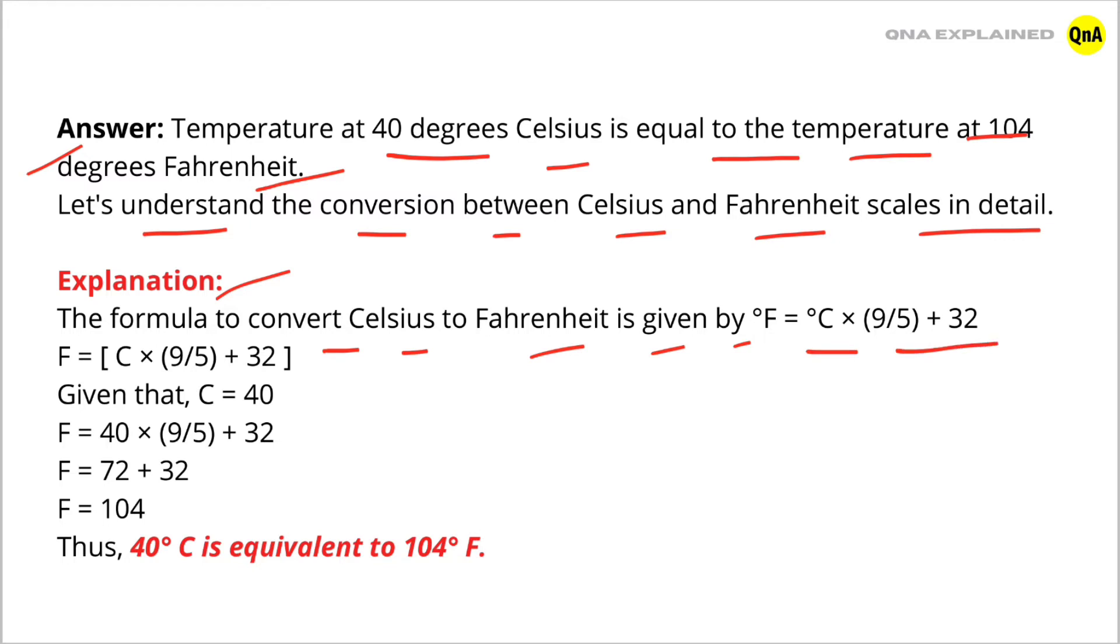Given that C = 40, put the value of Celsius in this formula: F = 40 × (9/5) + 32, which is equal to 72 + 32.